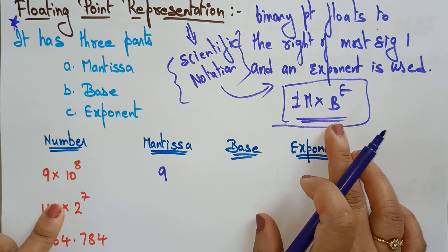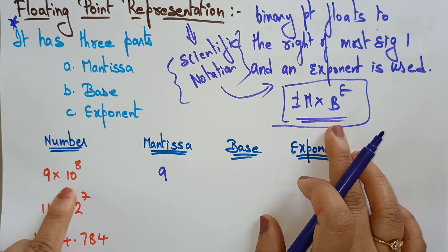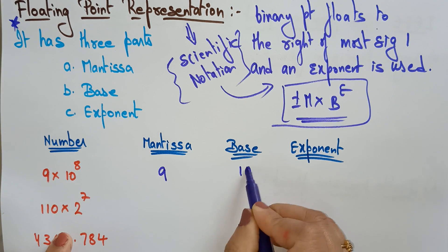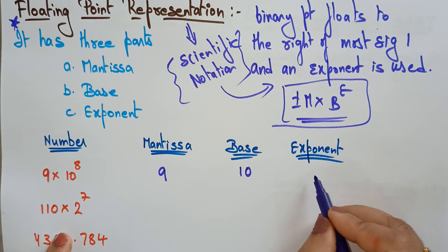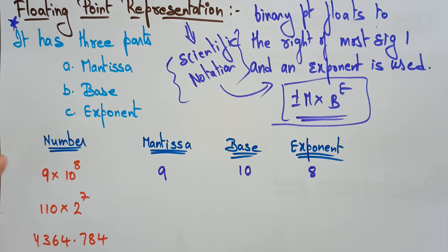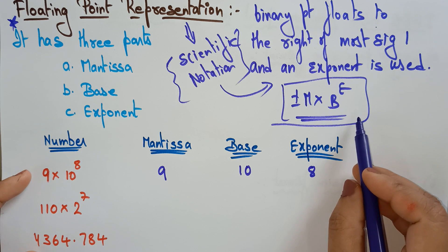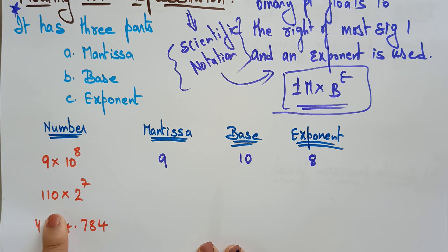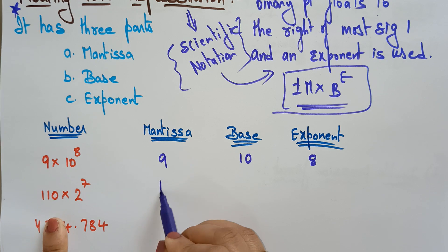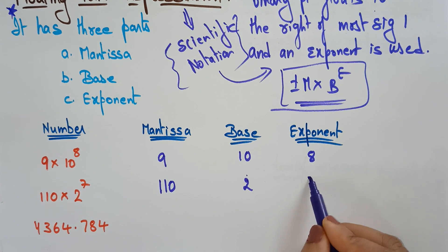What is the base? The base is 10, and what is the exponent? The exponent is 8. So this is the representation of the floating point number in scientific notation, in the form of plus or minus m into b power e. For a binary example, the mantissa is 1 1 0, the base is 2, and the exponent is 7.